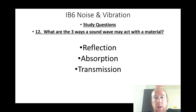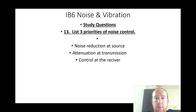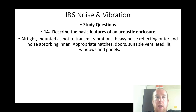What are the three ways a sound wave may act in a material? Reflection, absorption, and transmission. List three priorities of noise control: noise reduction at source, attenuation at transmission, and control at the receiver. Describe the basic features of an acoustic enclosure: airtight, mounted so as not to transmit vibrations, heavy noise-reflecting outer and noise-absorbing inner, with appropriate hatches, doors, ventilation, lighting, and windows/panels.